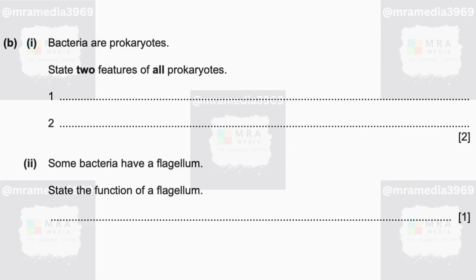Bacteria are prokaryotes. State two features of all prokaryotes. First: circular DNA — prokaryotic cells do not have a distinct membrane-bound nucleus; instead, their genetic material, consisting of a single circular chromosome made of DNA, is found freely floating in the cytoplasm. Second: prokaryotes lack membrane-bound compartments or organelles, except for structures like ribosomes, cell walls, and cell membrane. Prokaryotes contain ribosomes responsible for protein synthesis, which are smaller than eukaryotic ribosomes. Many prokaryotes also have a cell wall providing structural support and protection. So we could go with cell wall and ribosomes as our two features.